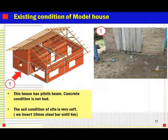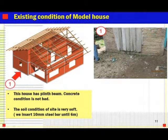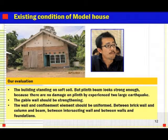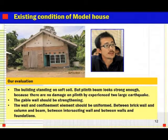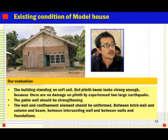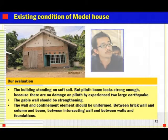The concrete condition of the prince beam is not bad. However, the soil condition of the site is very soft — we tried to insert a 10mm steel bar and could insert it up to 6 meters, confirming very soft soil. Our evaluation: the building is standing on soft soil, but the prince beam looks strong enough as there was no damage to it from the large earthquakes experienced. The gable wall should be strengthened, and wall and confinement elements should be made uniform — between brick wall and crown beam, between intersecting walls, and between wall and foundation.